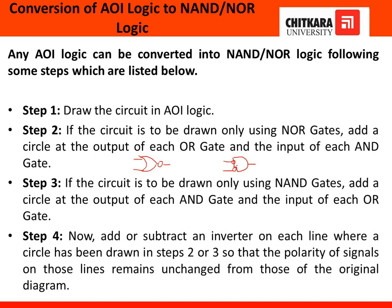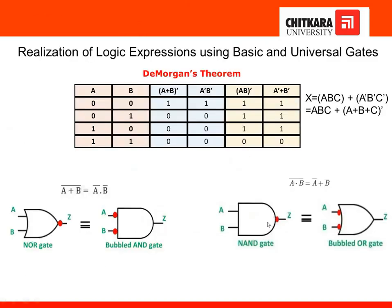If we have to convert an AOI circuit into NAND gates only, we place bubbles at the output of each AND gate so that it is converted into a NAND gate. We then place bubbles at the input of each OR gate so that it is converted into a bubbled OR gate, which is equivalent to a NAND gate using De Morgan's theorem.